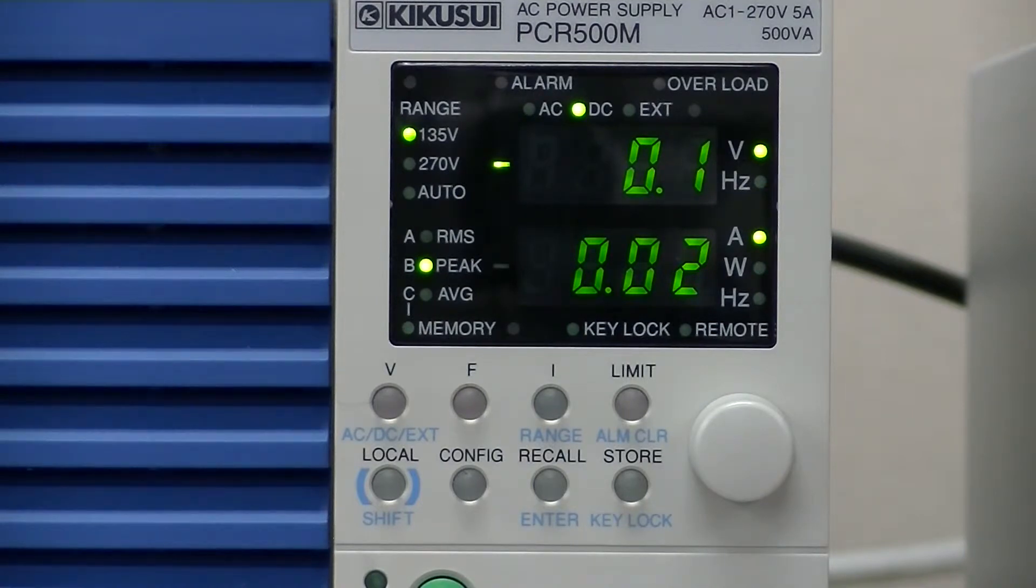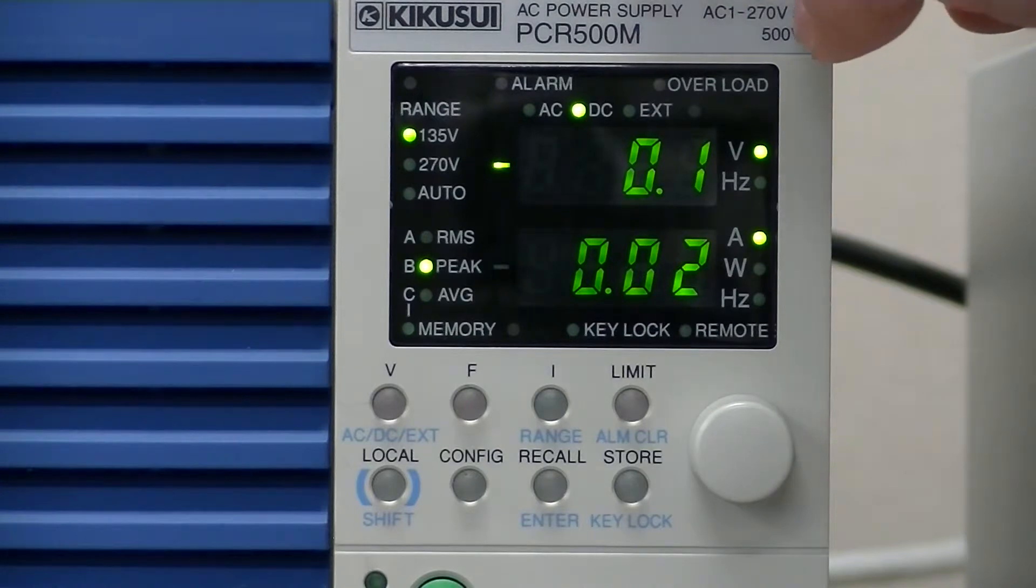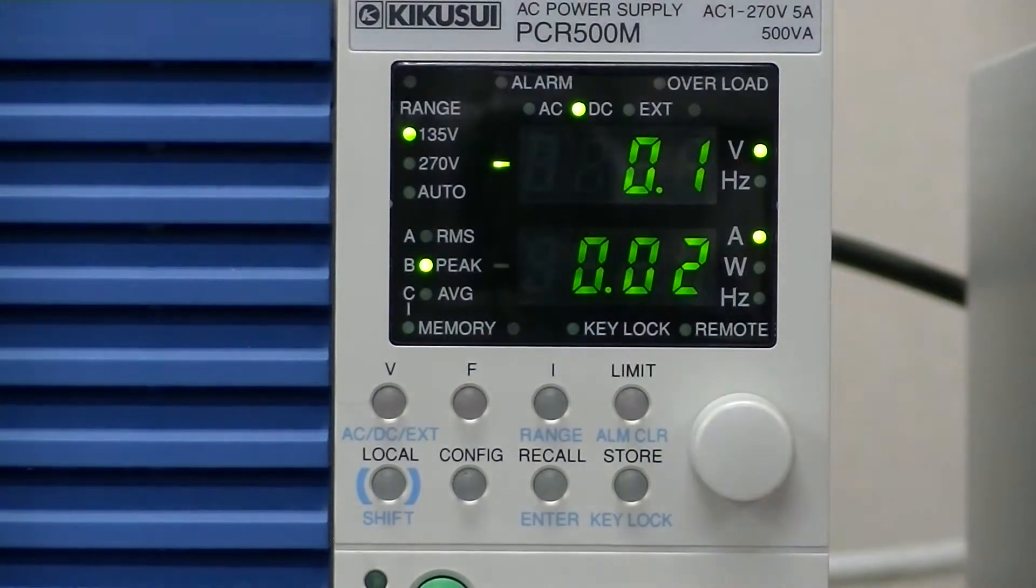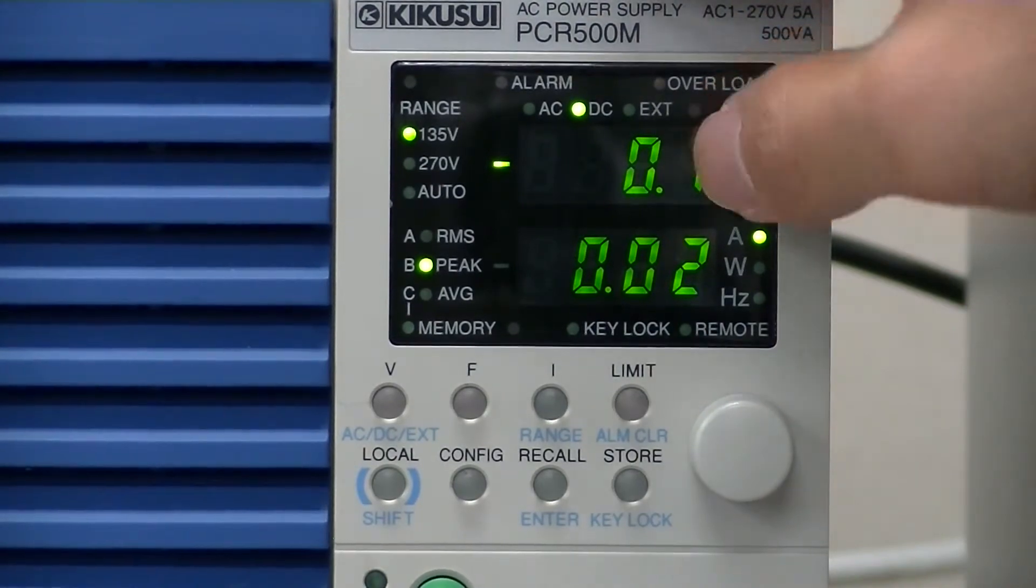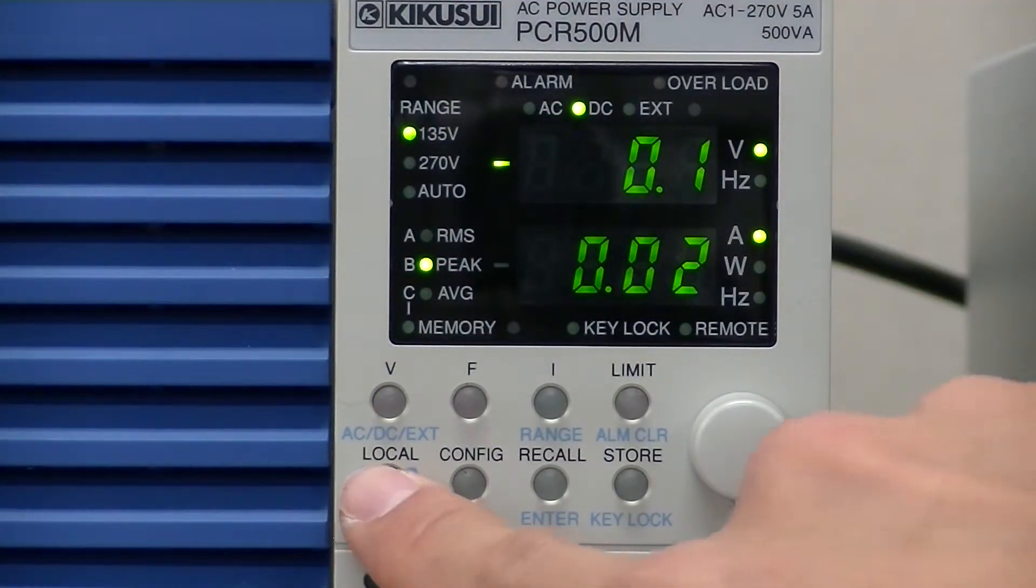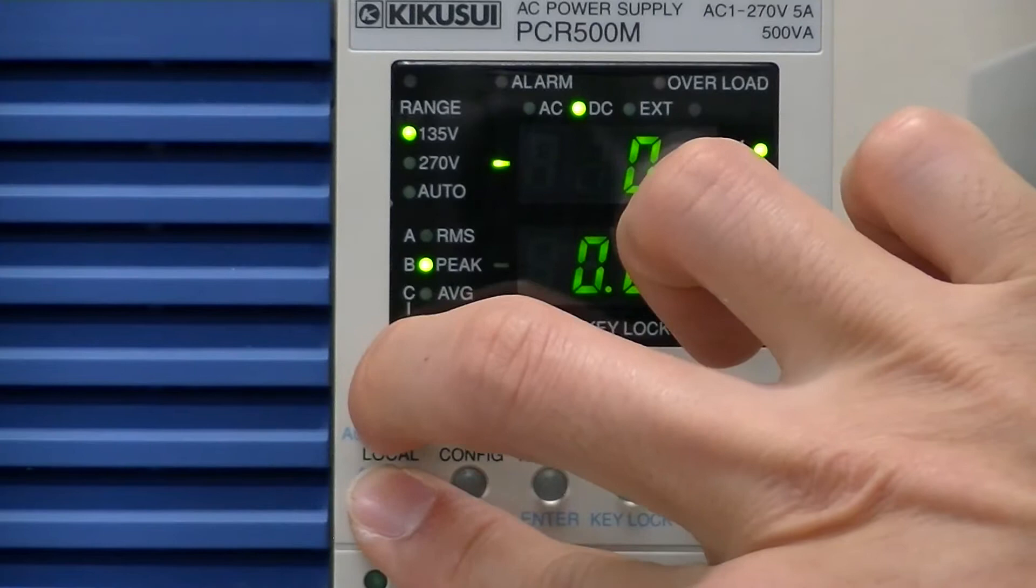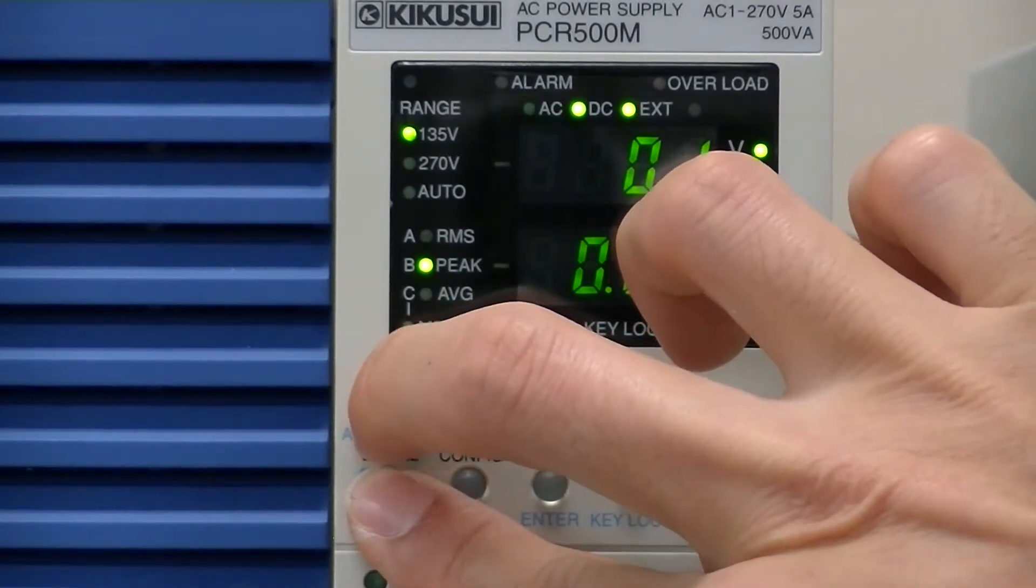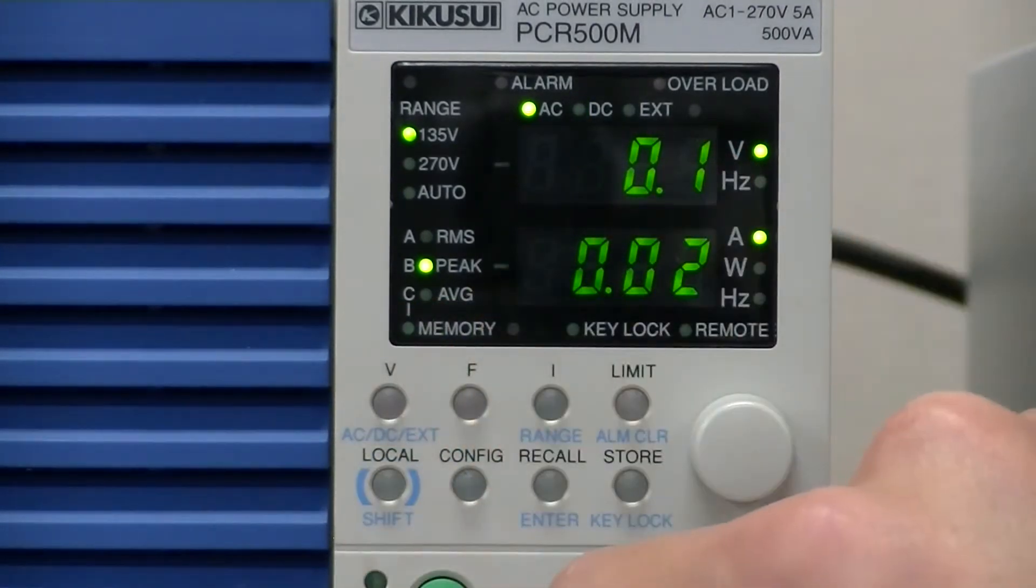Next, let's set the output mode. The PCRM series can set the output to AC or DC or AC plus DC mode. To set the output mode, press SHIFT and V. Let's set it to AC mode.